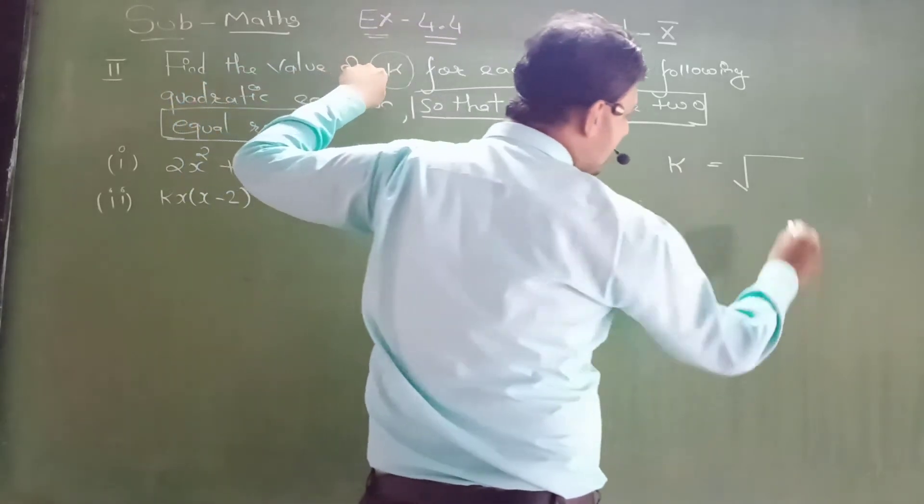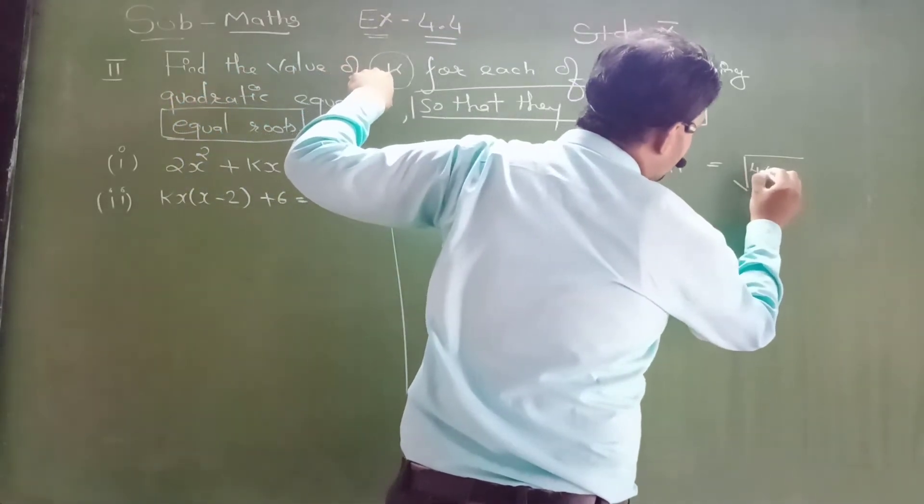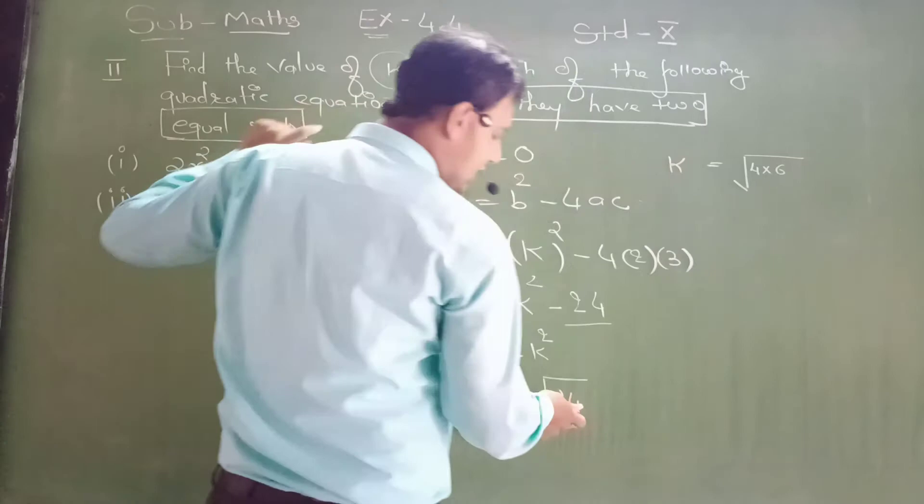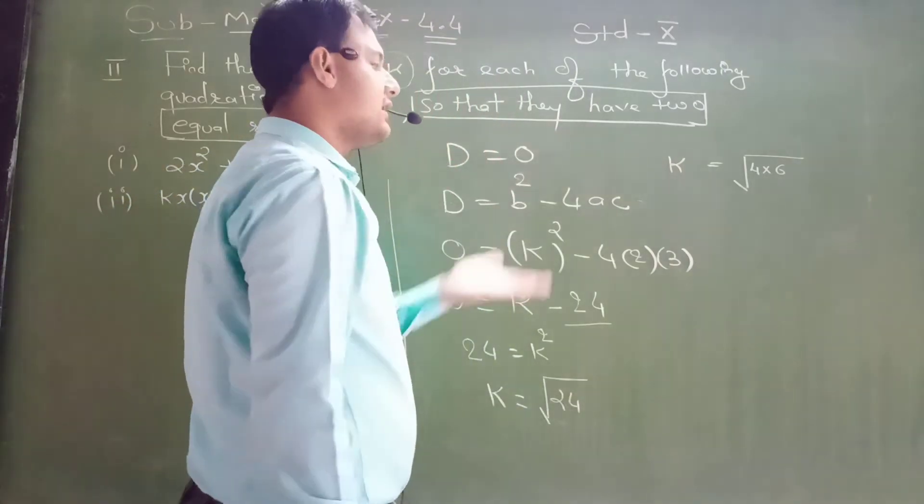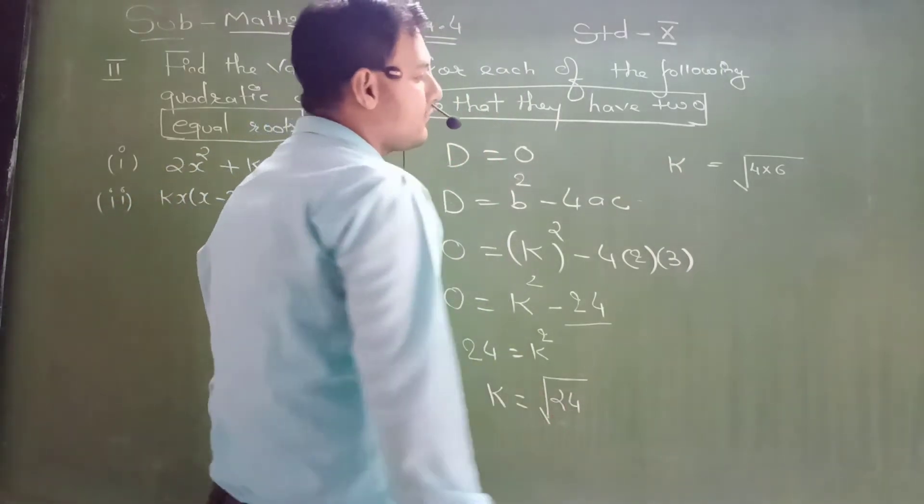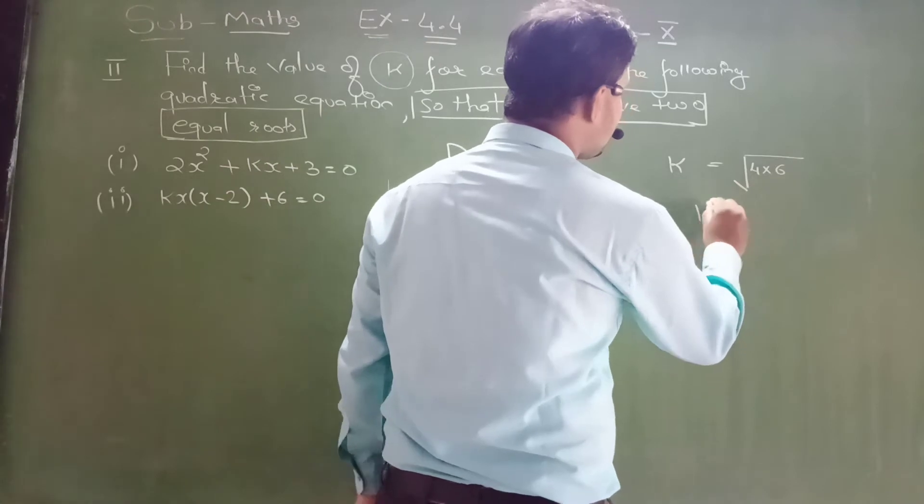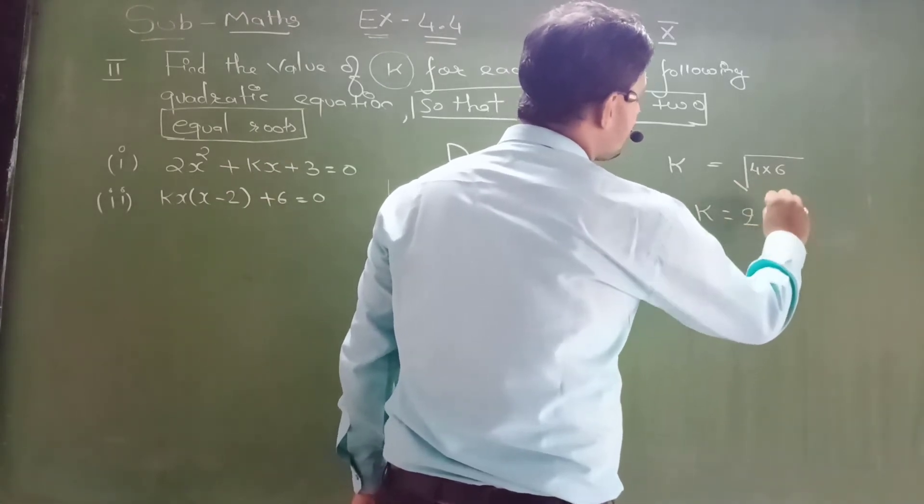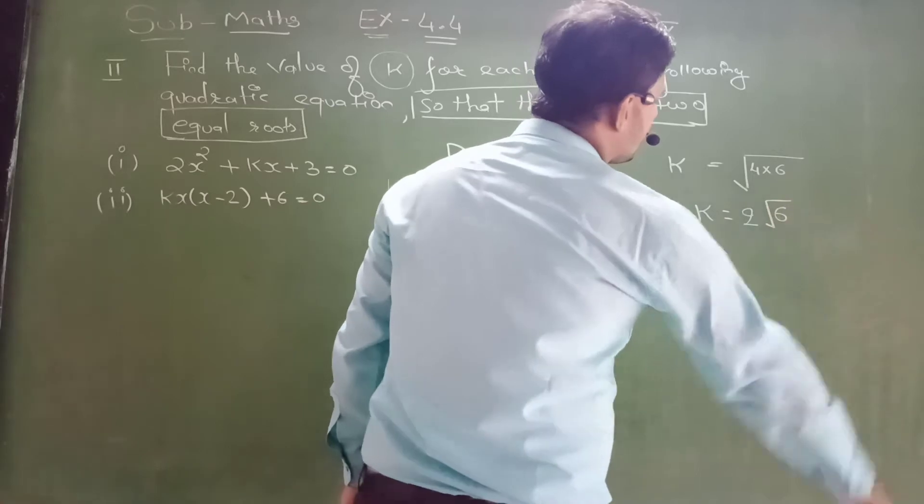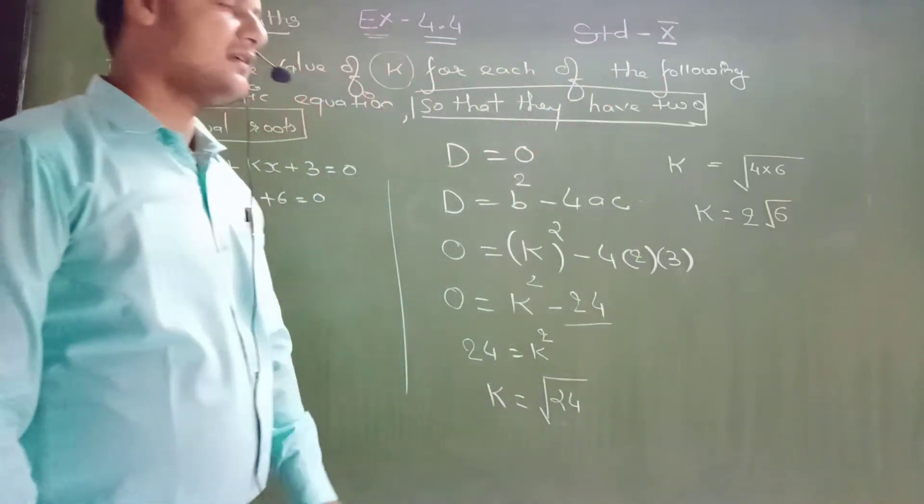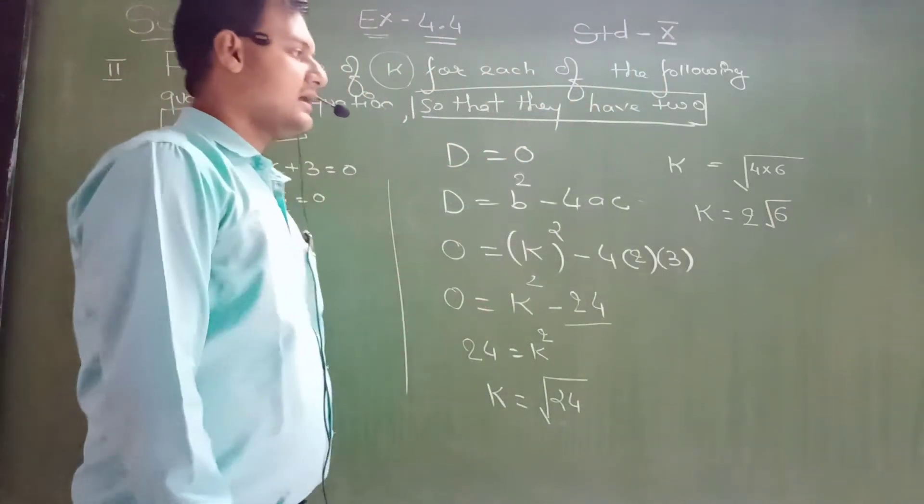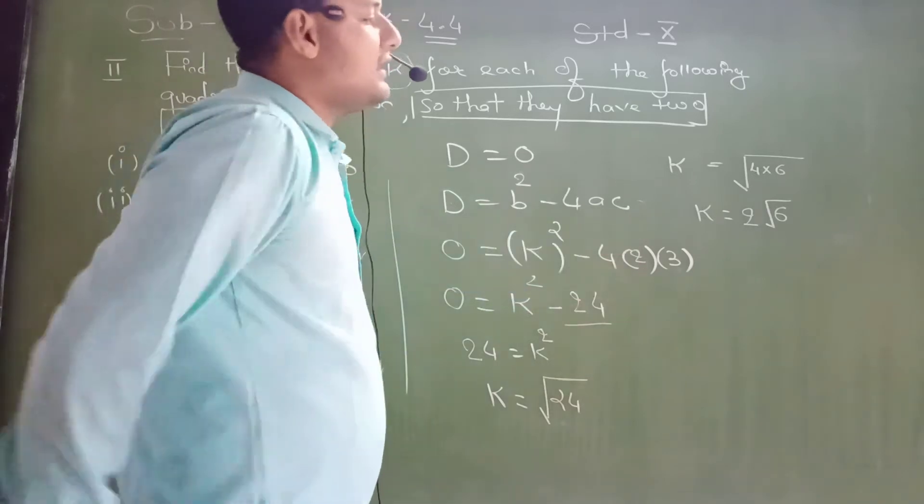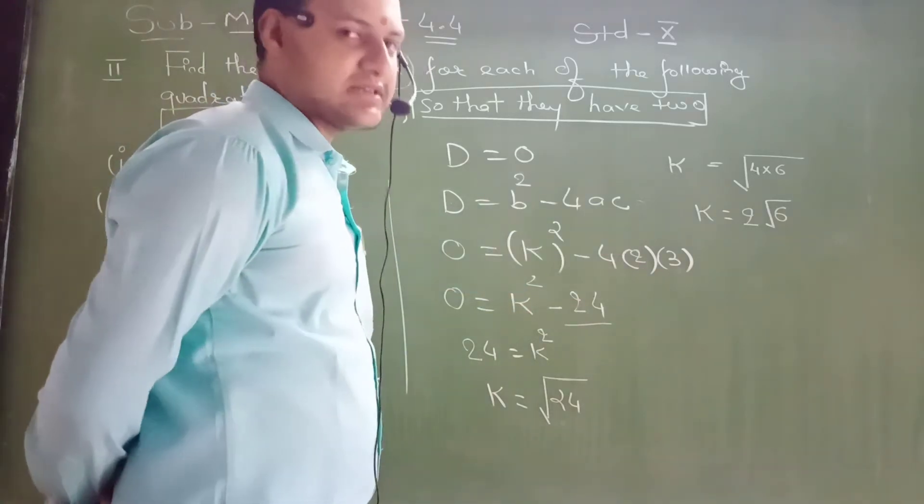24. Dear students, 24 ka root nahi nikalega. If 25 hota, then 5 ban jata. 24 ka root nahi nikalega, it means 4 × 6. 4 ka nikalega, that is 2√6. 6 ka root nahi nikala. So what is the value of k, dear students? 2√6.